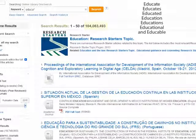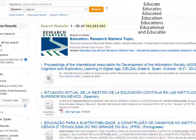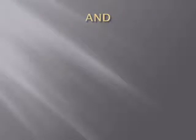If you drop off a little more of the word and truncate a little bit earlier, you get even more variations based on that root, like 'educable.' But be careful not to truncate too early, or you'll get words that have nothing to do with what you're researching.